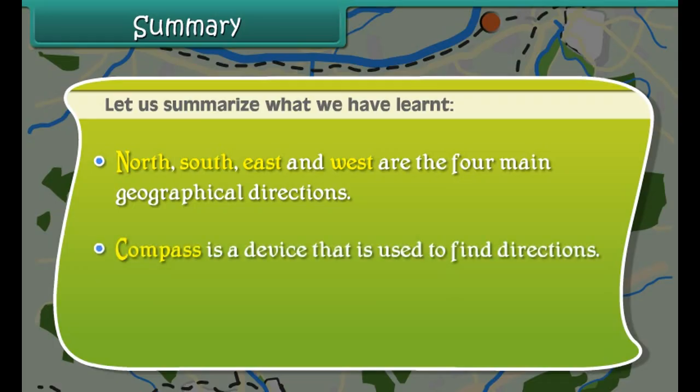Let us summarize what we have learned. North, south, east and west are the four main geographical directions. A compass is a device that is used to find directions. Maps use signs and symbols to indicate places.